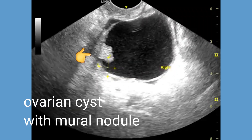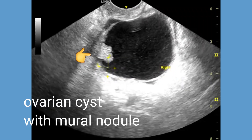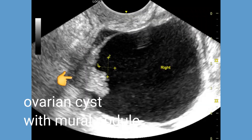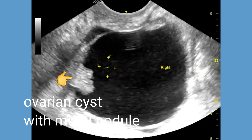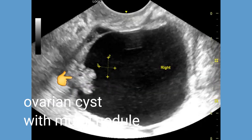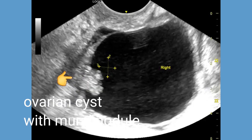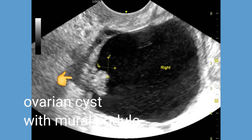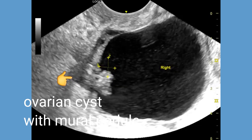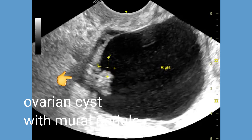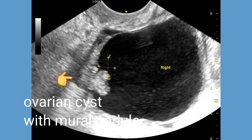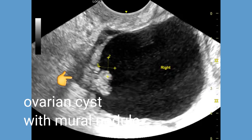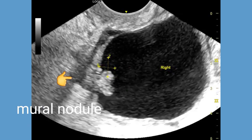This video shows an ultrasound examination of a middle-aged female who presented with pelvic pain and irregular menstrual bleeding. The right ovary is enlarged and shows a 4 cm cystic mass with a 0.9 cm mural nodule.